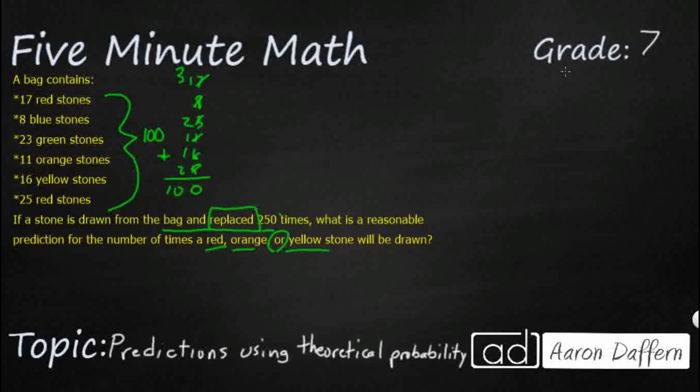So every single time I draw a stone, if I don't replace it, then the next time I wouldn't have a chance out of 100. I would have a chance out of 99, then a chance out of 98, 97. It wouldn't really work. And obviously, I can't pull a stone out 250 times if I'm not replacing them because 250 is a lot larger than 100.